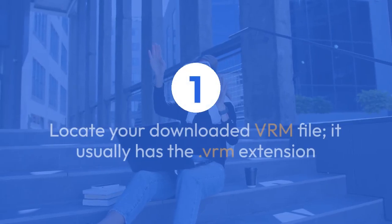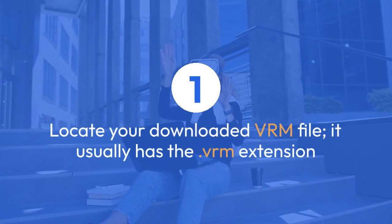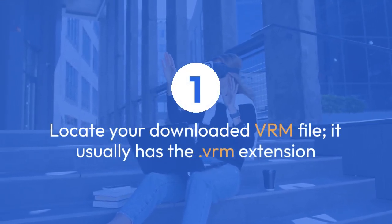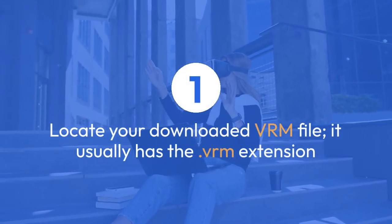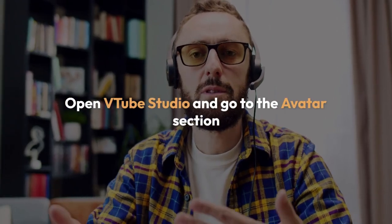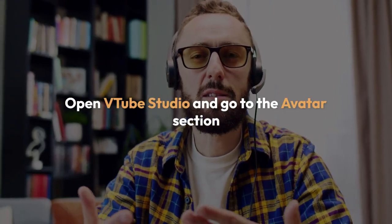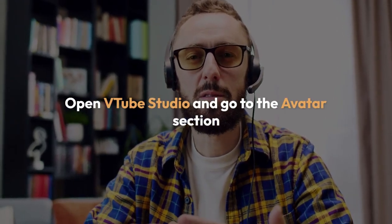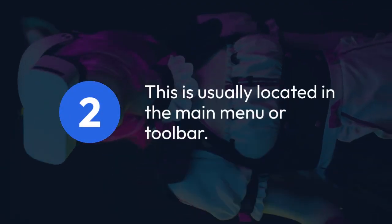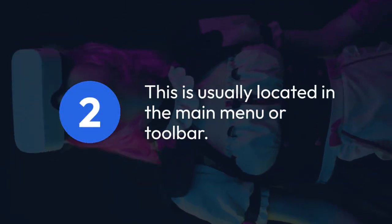Step 1: Locate your downloaded VRM file. It usually has the .VRM extension. Step 2: Open VTube Studio and go to the avatar section. This is usually located in the main menu or toolbar.